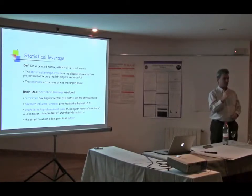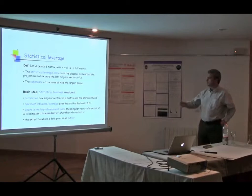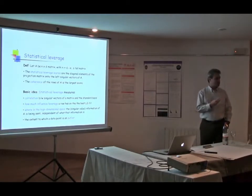This could be a bunch of columns from the identity. This could be a bunch of columns from the Hadamard. So these row lengths could be very uniform or very non-uniform, anything in between. And the coherence of the rows is the largest such score.